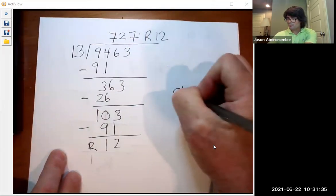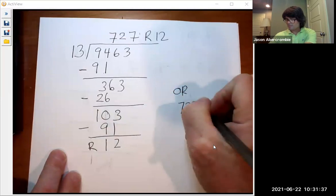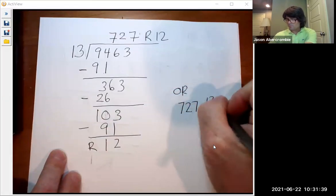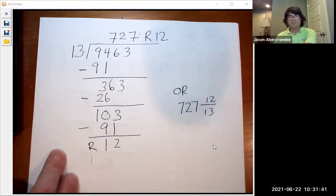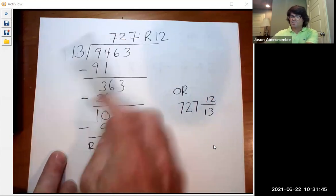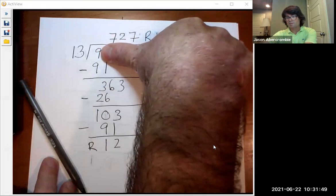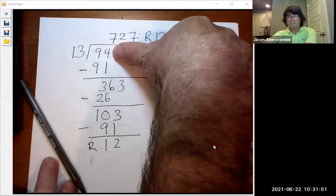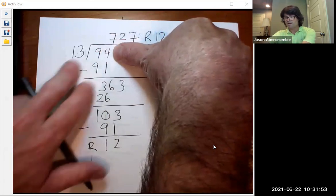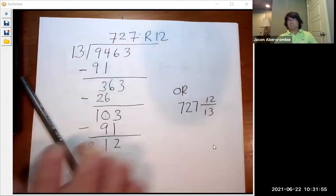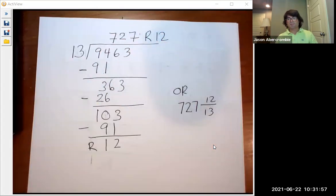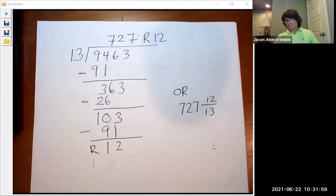And you can say 727 and 12/13. That's another way to write the same thing. It doesn't matter how many digits are out here. You just start with the 9. If 13 can't go into it, then you do the 94. You just keep moving out until you can divide evenly. I'll do one more example.